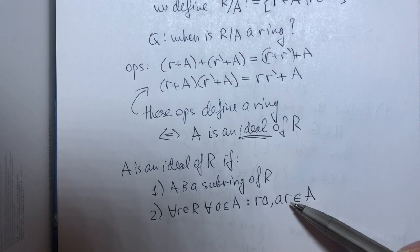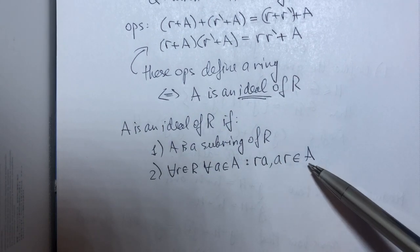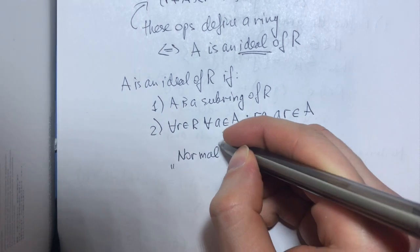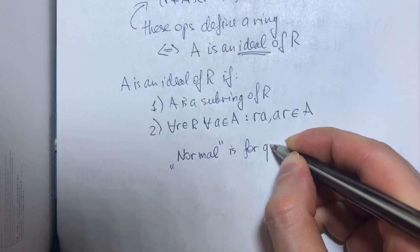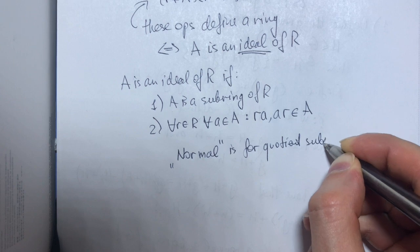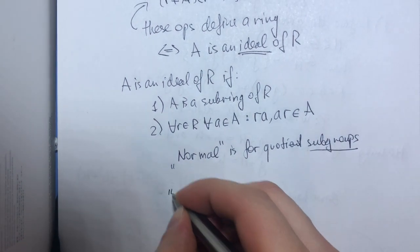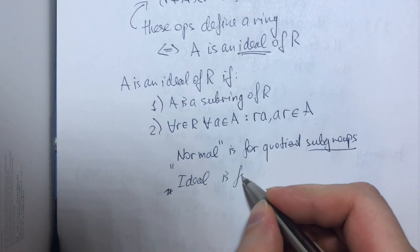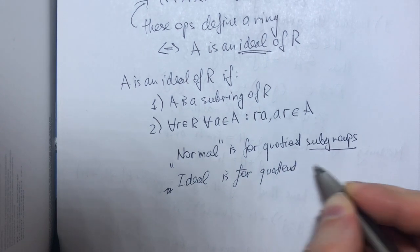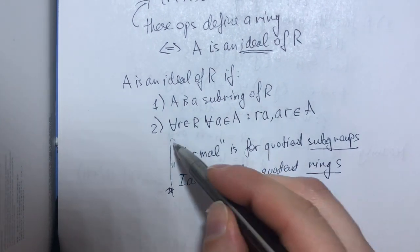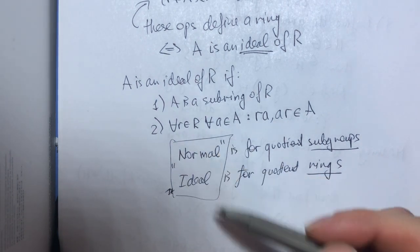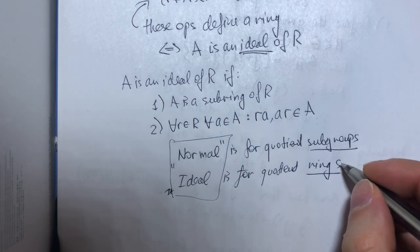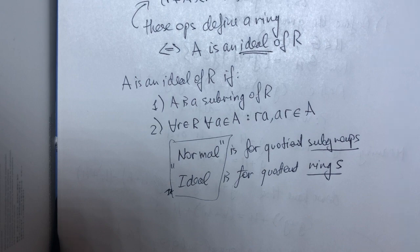So all this looks somehow similar to the notion of a normal subgroup. So for your future reference, remember that the concept of normal subgroup is defined for quotient groups. And its brother in the field of algebra, in the field of rings, ideal, is defined for quotient rings. So these two concepts are similar, but they are defined for different structures. One is a group and one is a ring. And here is a general intuition that you should remember long term when you do algebra.